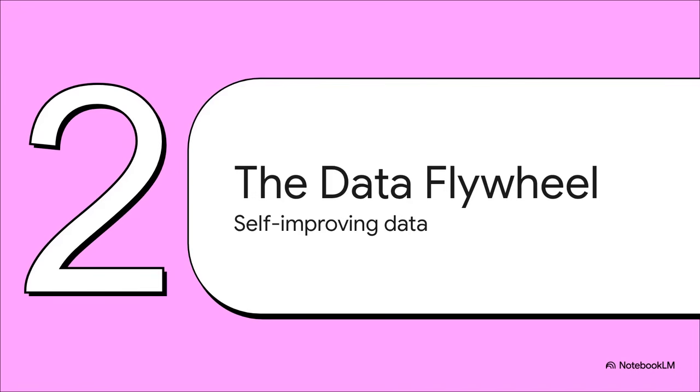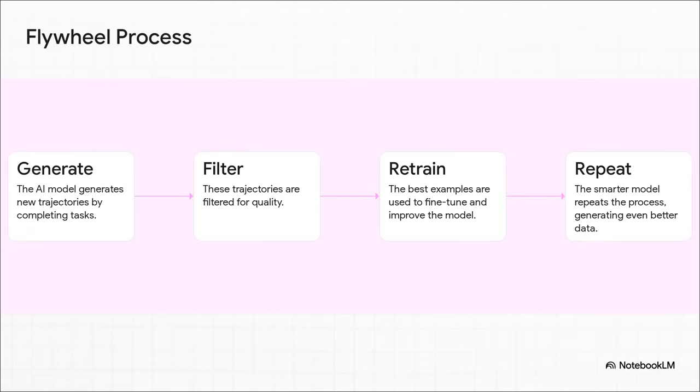Okay, so how did the UITARS2 team tackle that first huge hurdle, the data scarcity problem? Well, this is where things get really clever. They built something they call a self-improving data flywheel. The idea is actually pretty simple, but it's so powerful.